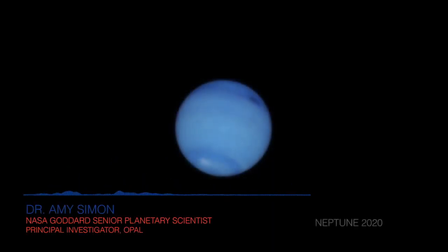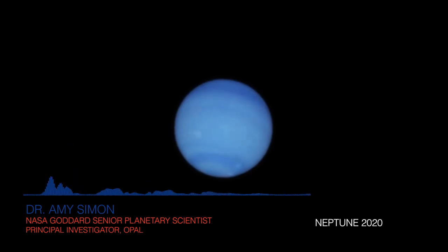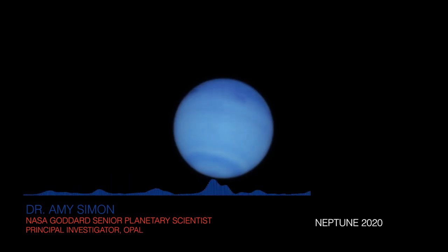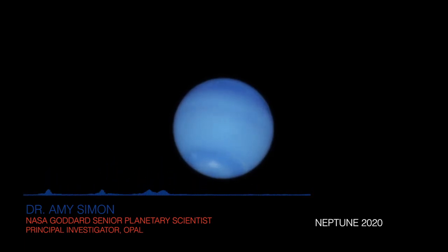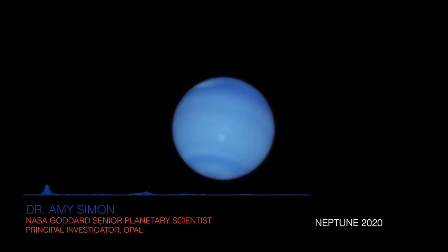The latest image of Neptune is really interesting because we don't see those bright white clouds we've been seeing the last few years. As a matter of fact, the only thing we see in that particular image is this great dark spot. In a lot of ways it brings us around full circle, because this looks so much like the Voyager image from 1989. That was pretty surprising — not to see as much cloud activity as we've been seeing in previous years.